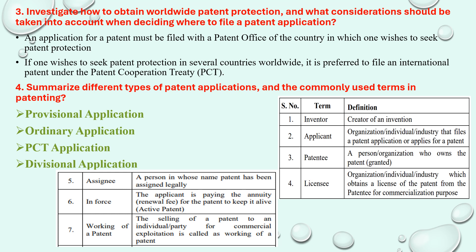Moving on to the next question: summarize different types of patent applications and commonly used terms. The four types of patent applications are: provisional, ordinary, PCT, and divisional application. You should write and explain each one — provisional, ordinary, and PCT — in detail.